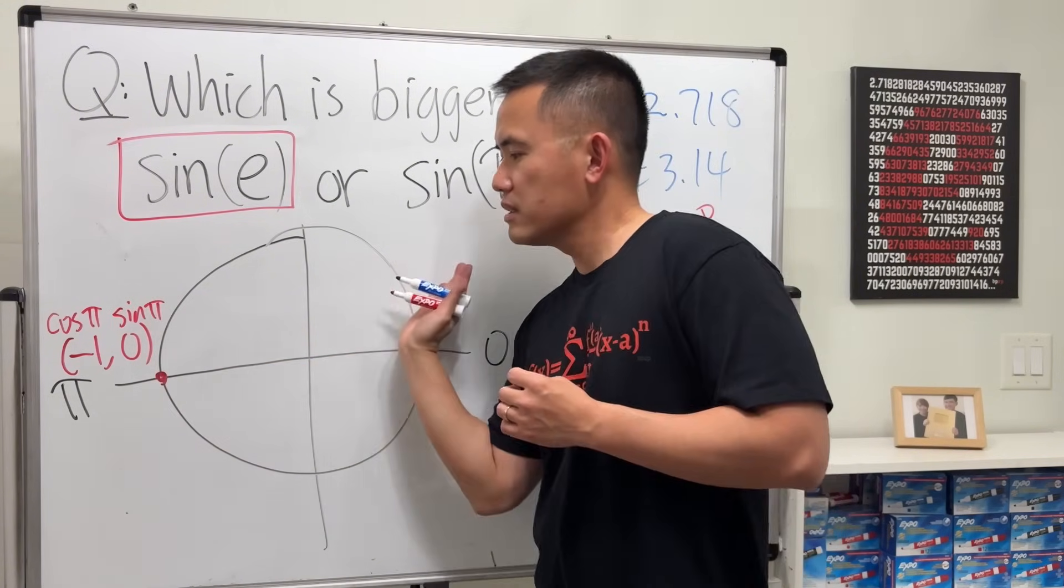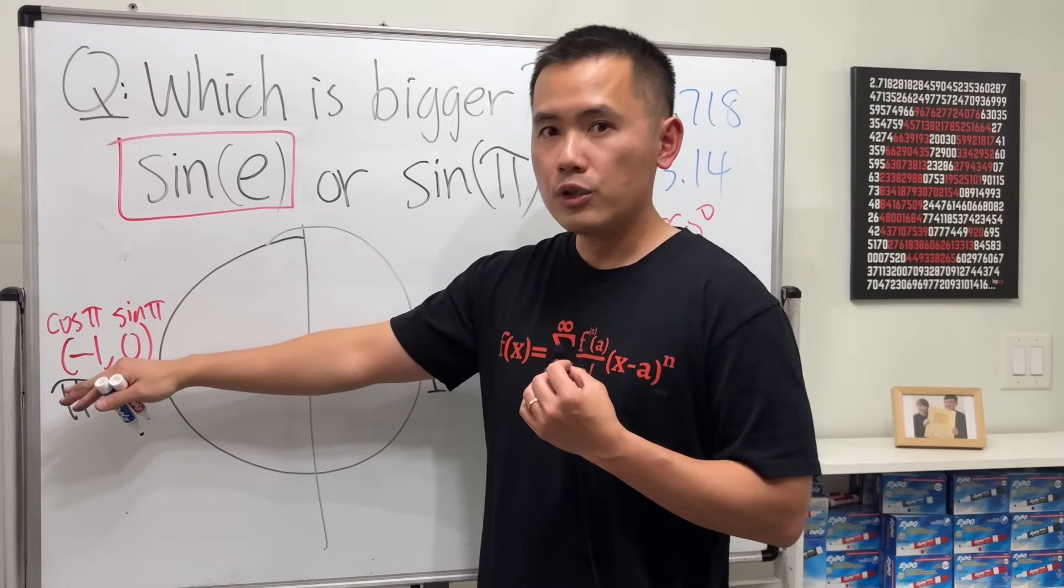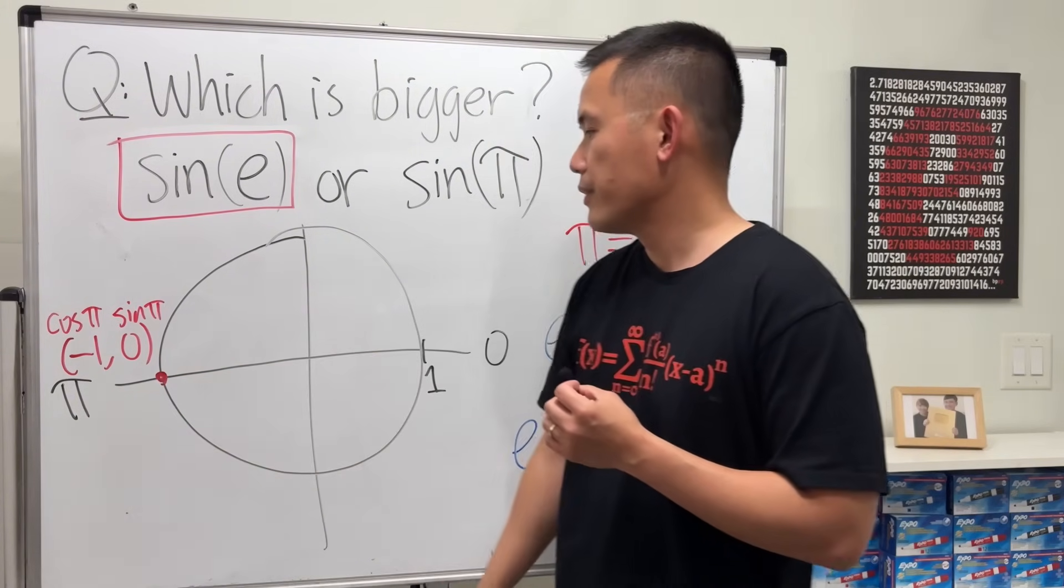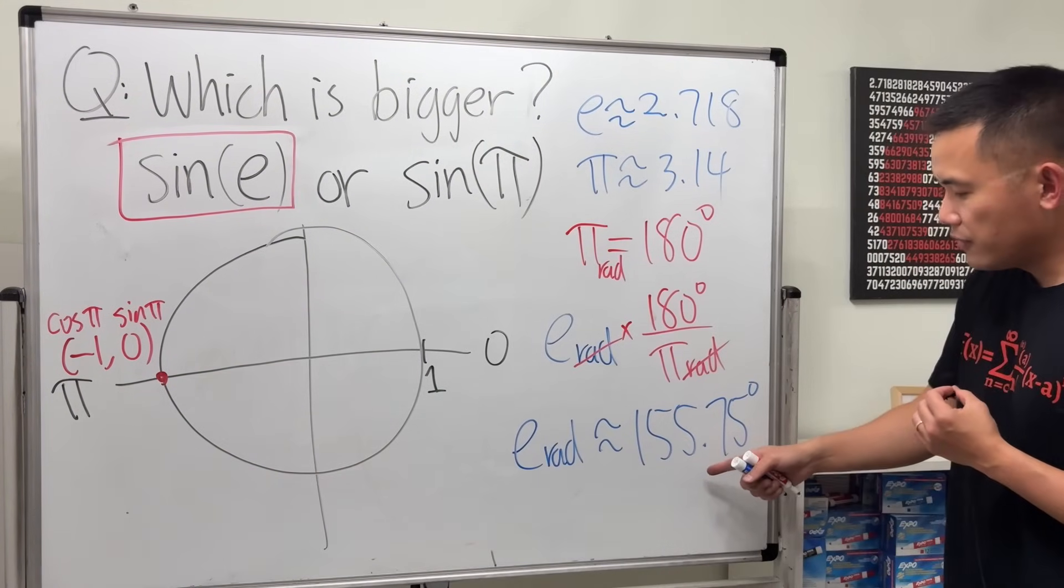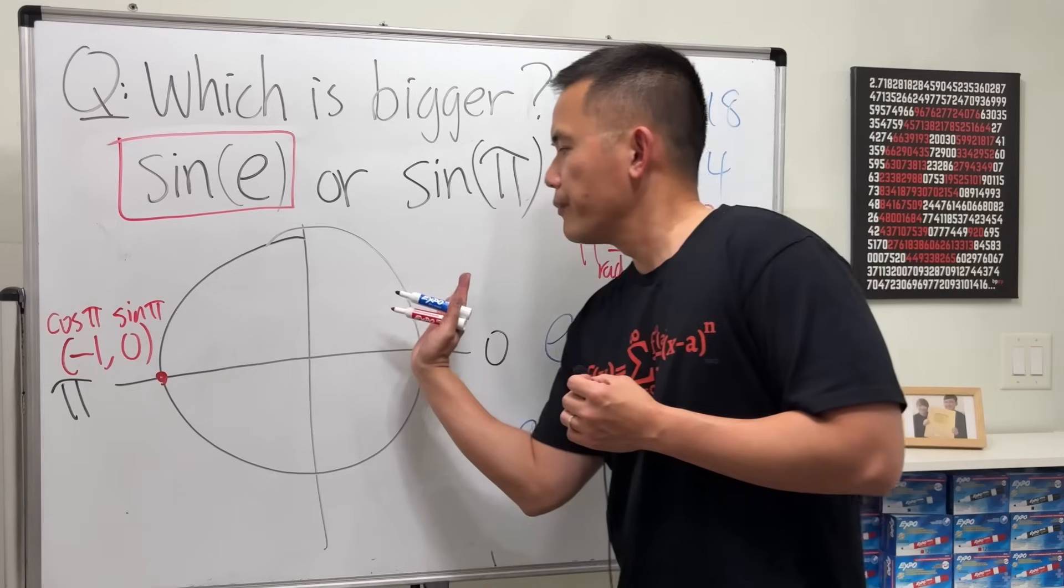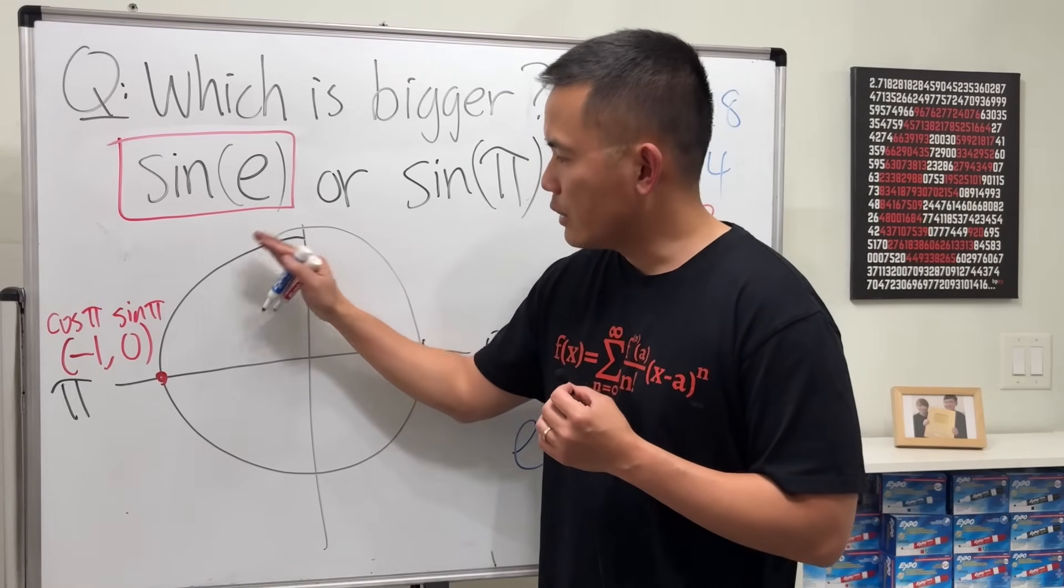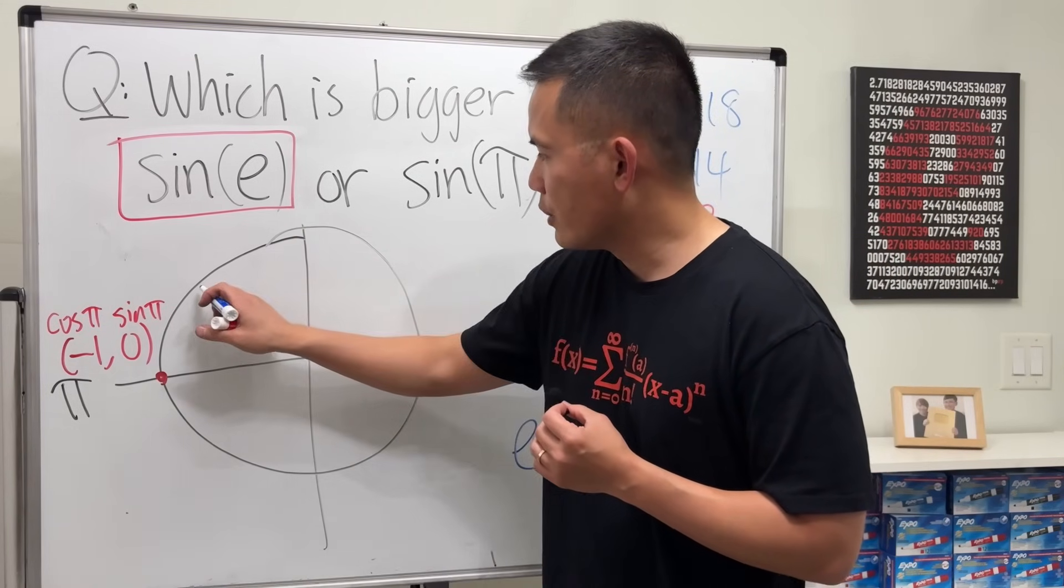...before the π, right? Because from here to here is 3.14 radian. But if we have 155.75 degrees, I know that much better. From here to here is 90, and then we have to go 60 more, so it will be somewhere right here.